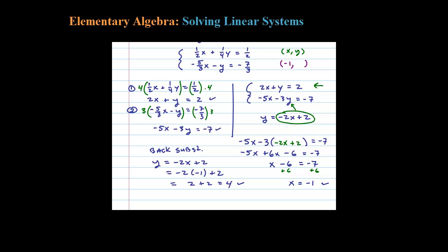So the ordered pair that solves the original system is (-1, 4). You can test that: 2 times -1 is -2, plus 4 is 2 - it works. -5 times -1 is 5, minus 3 times 4 which is 12, equals -7. 5 minus 12 is -7, so it solves the original system. (-1, 4) is the answer.